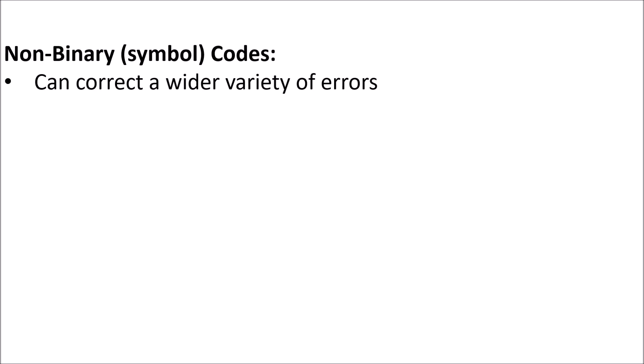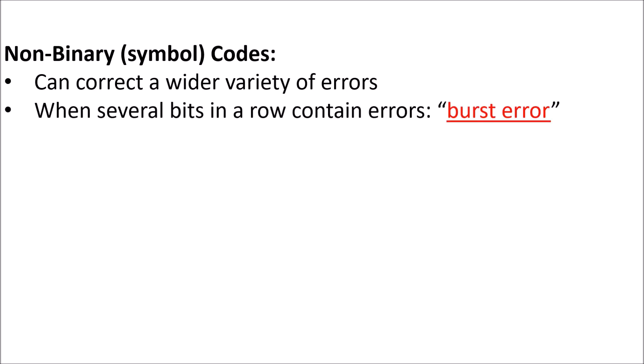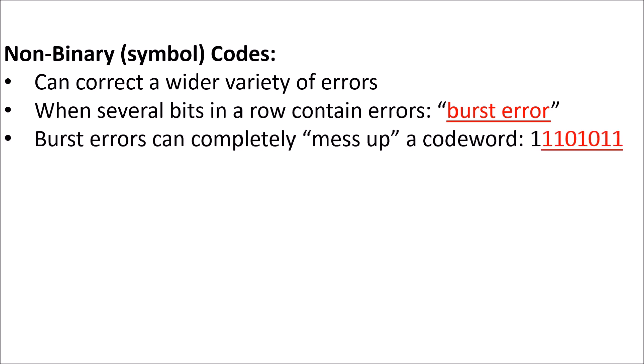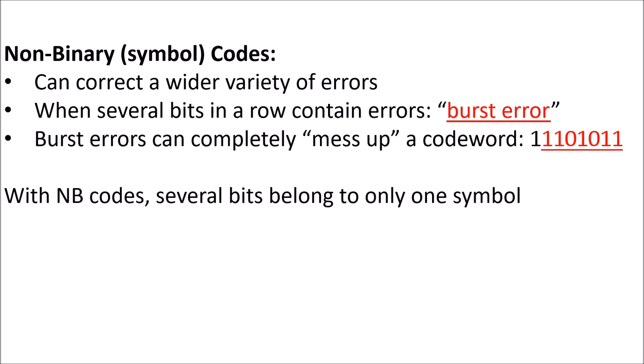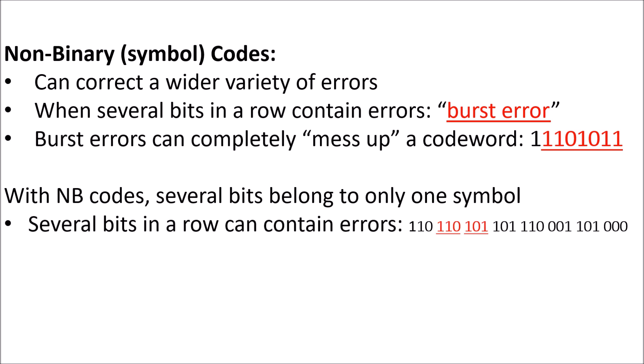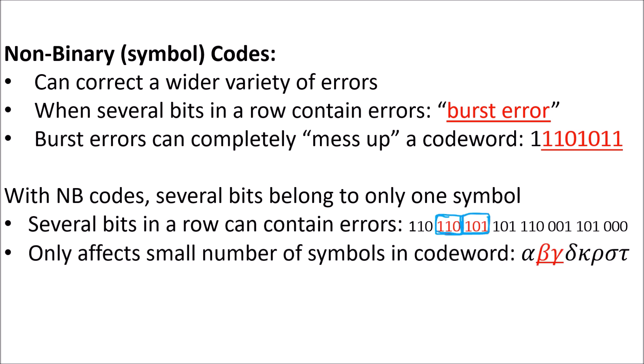In particular, when several bits in a row contain errors, this is called a burst error. Burst errors can be difficult to correct, since they can completely mess up an entire codeword, leaving it useless. But with non-binary codes, since several bits belong to only one symbol in the codeword, several bits in a row can contain errors and this will only affect a small number of symbols in the codeword, which means the error can be easily fixed.